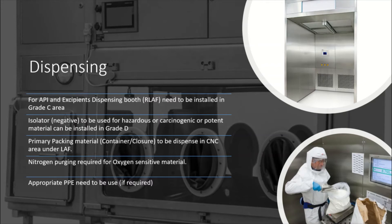Primary packing materials, which are less critical, can be dispensed in CNC areas under LAF. Some materials like APIs may be oxygen-sensitive — ensure you purge nitrogen and seal them properly. Appropriate PPE needs to be used by the operator based on the requirement when handling any kind of potent material.